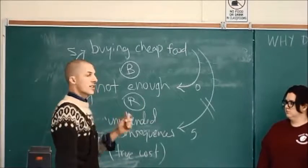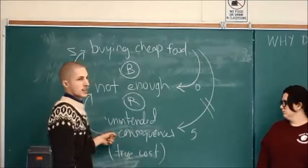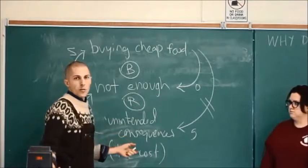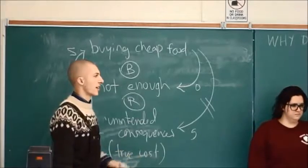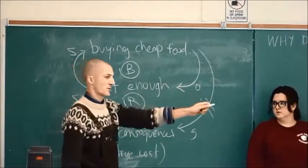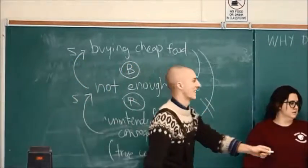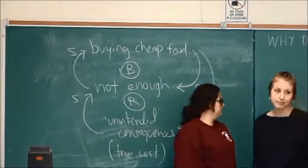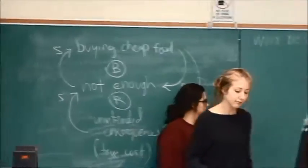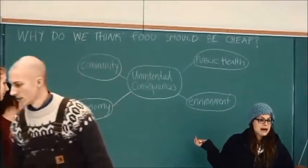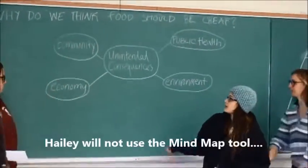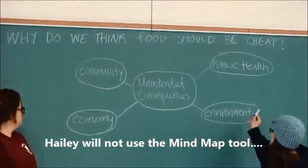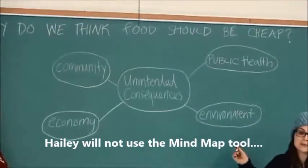So we're going to look at what these unintended consequences are — what are we actually paying for our food? In order to look at the unintended consequences, we made a mind map, and we have four major groups: community, economy, public health, and environment.